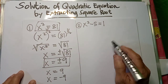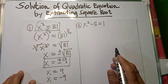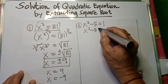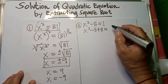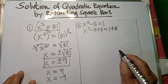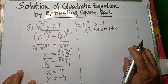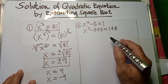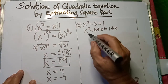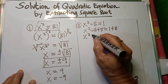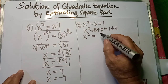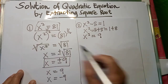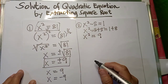For example number 2, we have x squared minus 8 is equal to 1. We need to transpose the 8 so that x squared remains on the left-hand side of our equation. By applying the addition property of equality, we add 8 to both sides. So 1 plus 8 is equal to 9. The form we now have is the same as example number 1, so we follow the same steps.